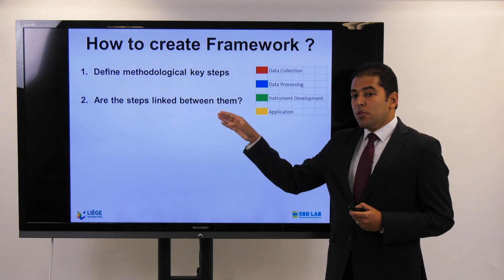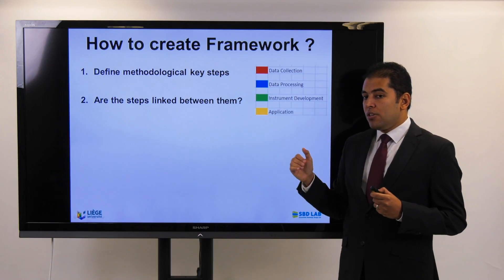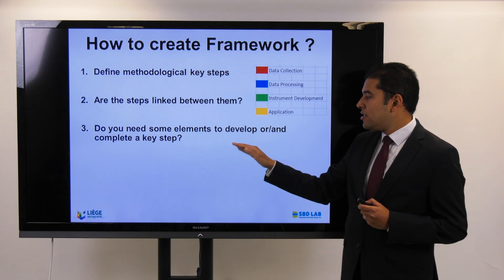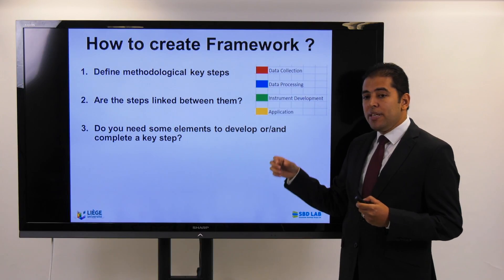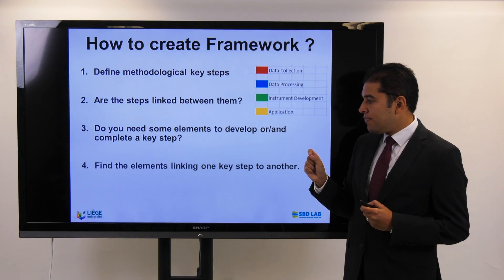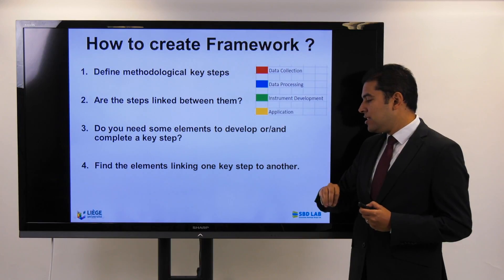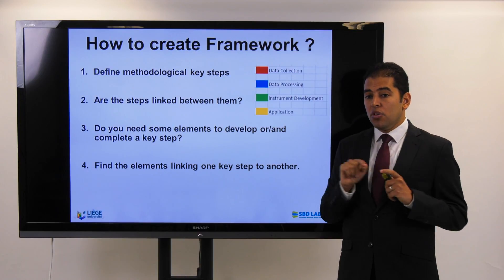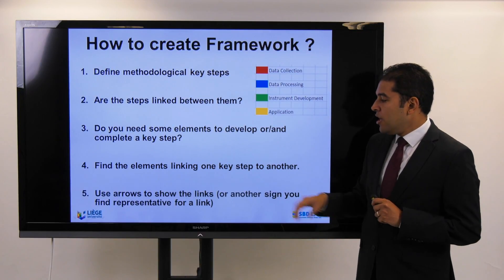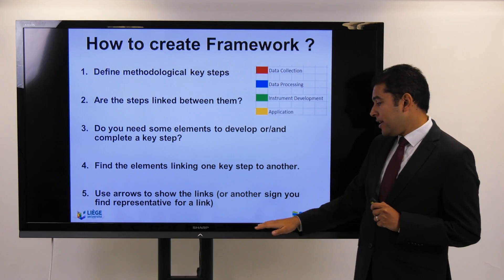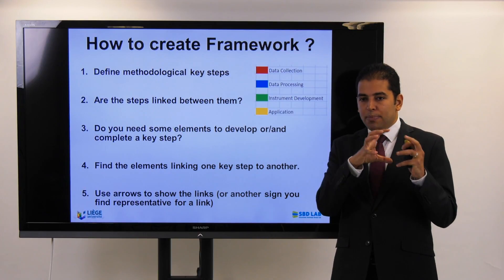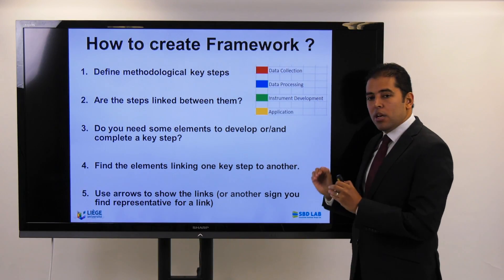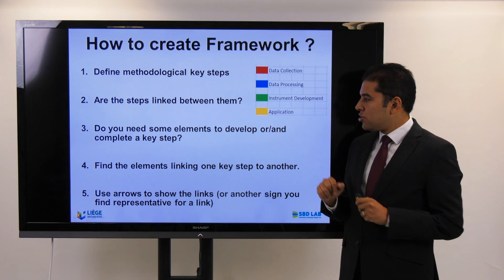Are the steps of your research linked? Are they following each other? Are they going in parallel? These are questions to be answered. You also need to answer: do you need some elements to develop or complete a key step of your methodology, and you have to find the element linking one key step to another. Use arrows to show the links and make sure that every step in your research is related to another step, from the beginning with data collection through the testing or validation of your research findings.